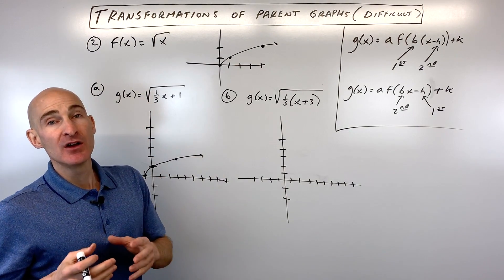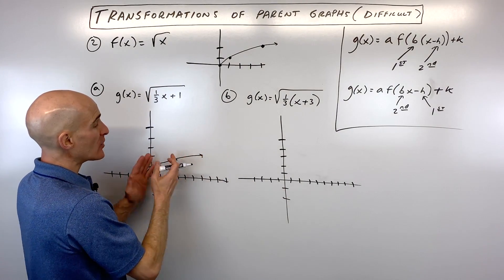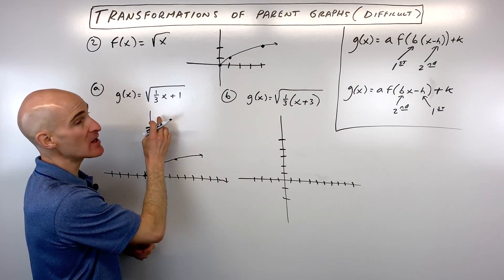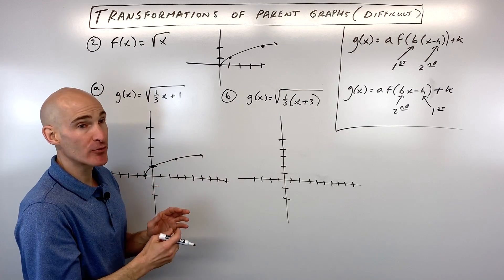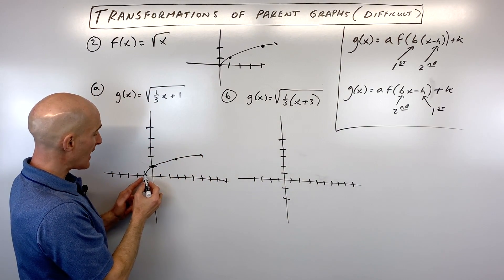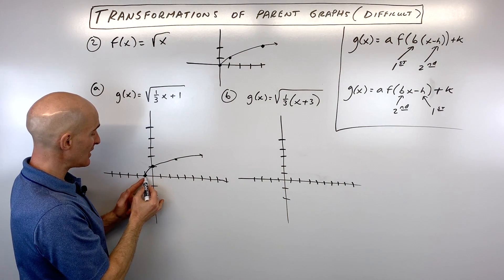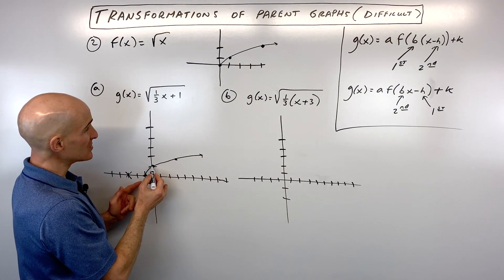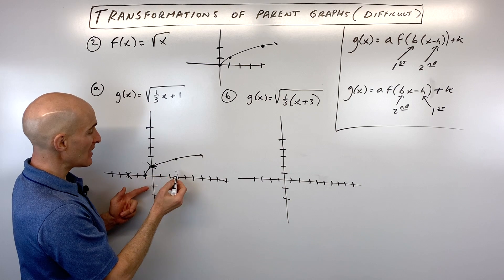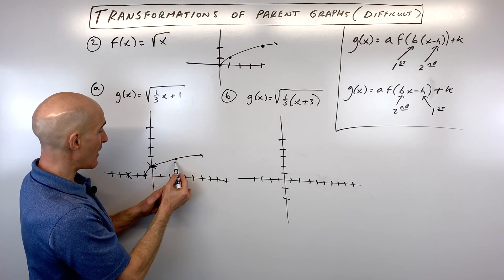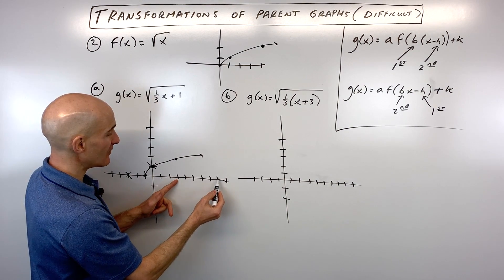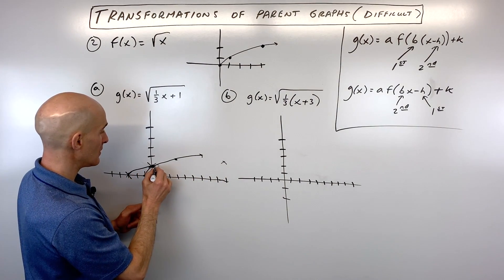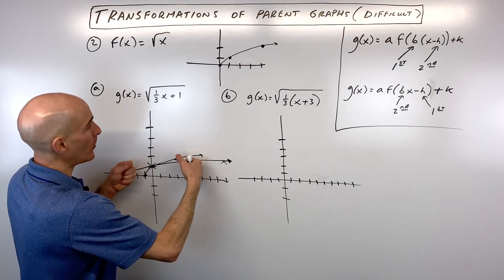Now we apply the 1/3, which has the reciprocal effect — so instead of dividing x-values by 3, we actually multiply them by 3, giving a horizontal stretch. The point at x = −1 moves to x = −3; x = 0 stays at 0; the point at (3, 2) moves to (9, 2). The y-values stay the same; we're only changing the x-coordinates, giving us a stretched graph.